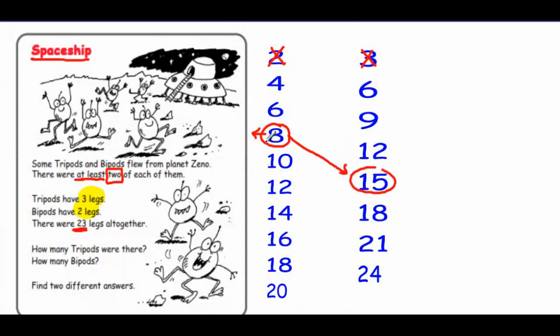So I can choose eight from this list and 15 from this list. Eight bipods means eight legs means four bipods. 15 legs here means five tripods. So the first possible solution here is four bipods and five tripods.